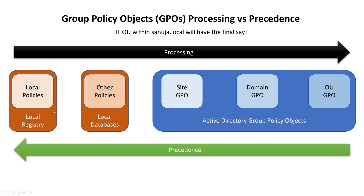For example, let's say I have a local policy saying that my background image should be a certain image, but my organizational unit policy says something else. Because the order of processing goes from local policies to other local databases to site GPOs to domain GPOs to organizational unit GPOs, the organizational unit GPO will take precedence.